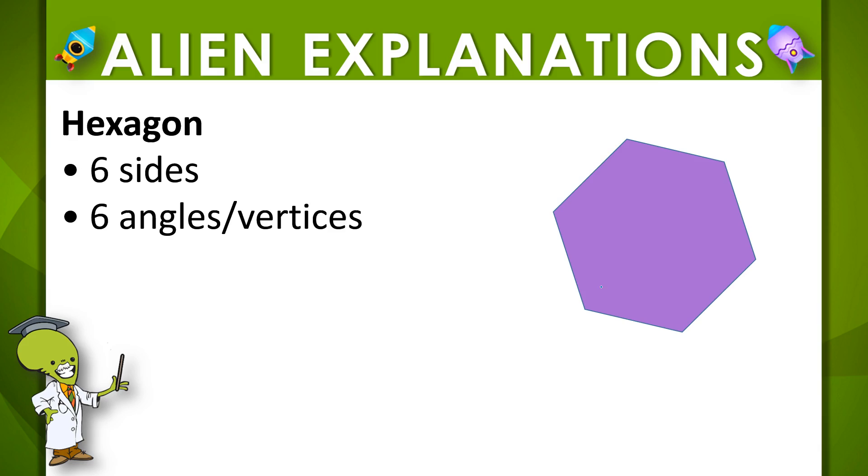Next up, we have the hexagon. So it has one, two, three, four, five, six sides, and one, two, three, four, five, six angles or vertices.